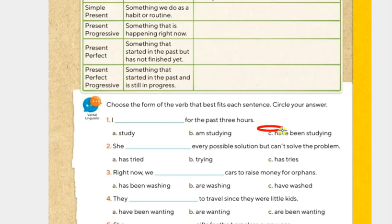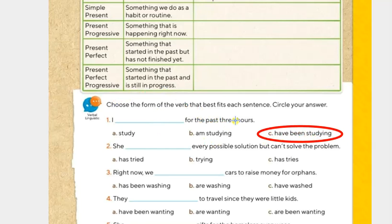The correct answer is: I have been studying. Why? Because it is something that I started in the past and is still in progress. So 'I have been studying for the past three hours' means I continue doing this — I began at a moment in the past, but I continue with this activity. Pay attention to this same approach for numbers two, three, four, and five.